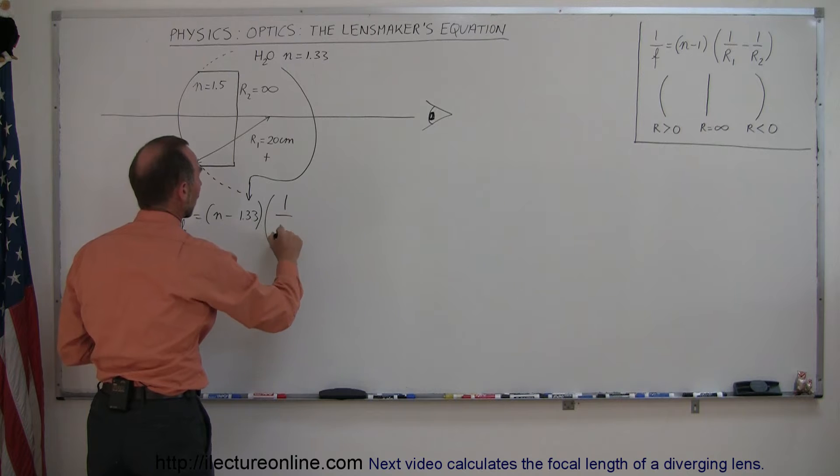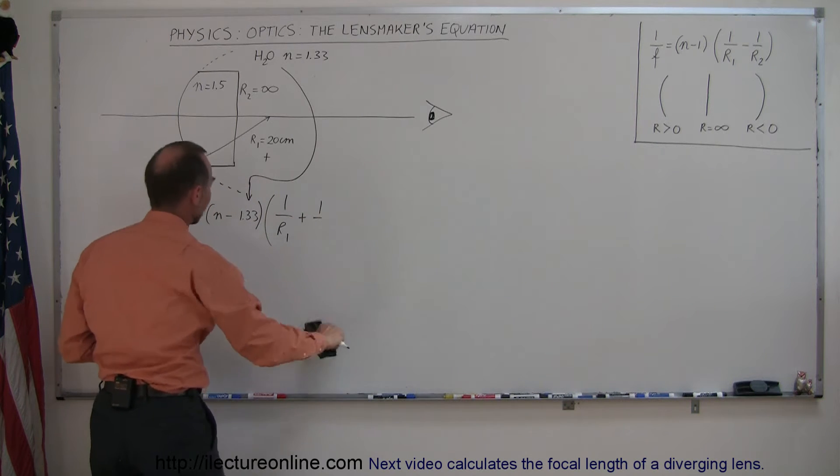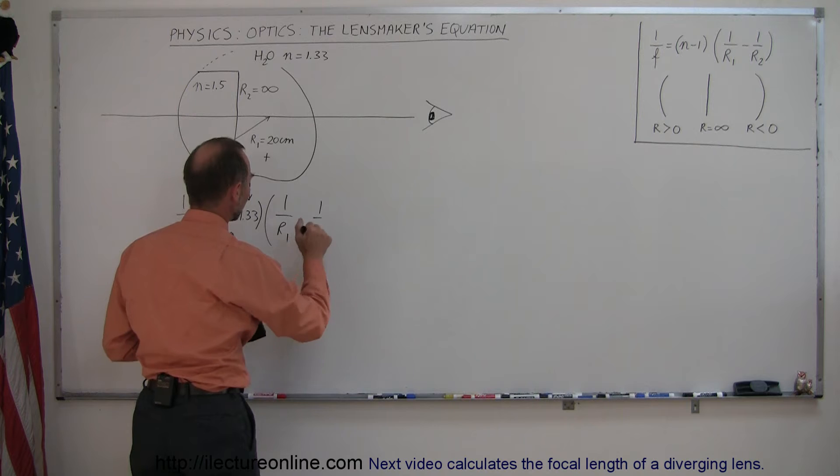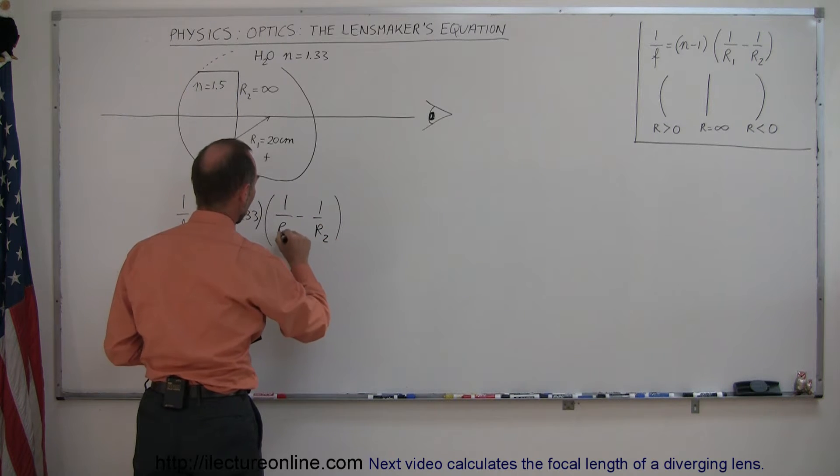Times 1 over r1 plus 1... Oh, not plus. Minus, that would cause a problem. Minus 1 over r2.